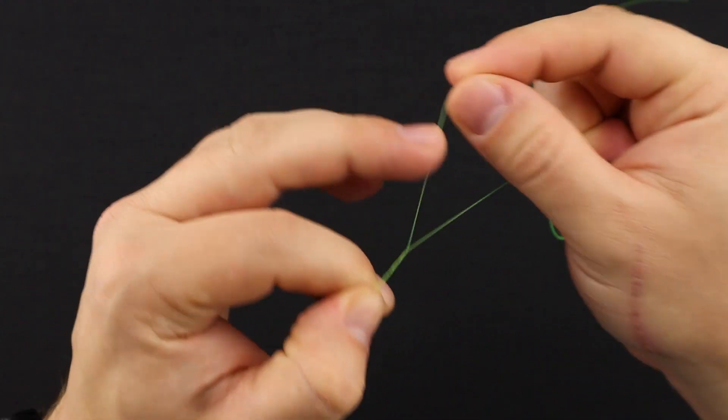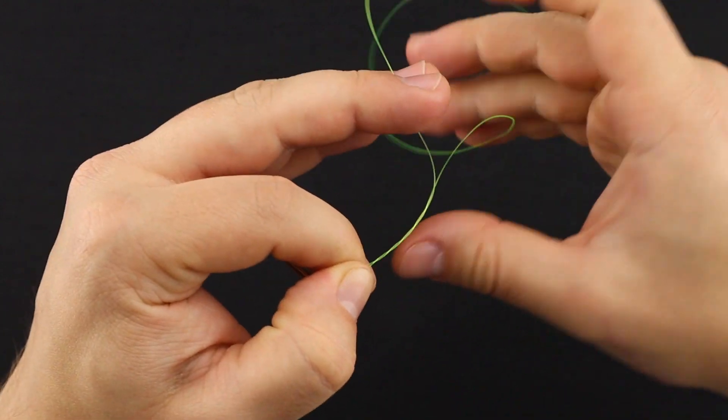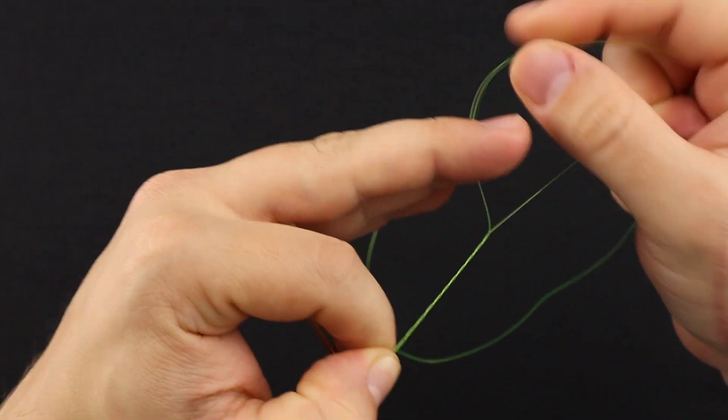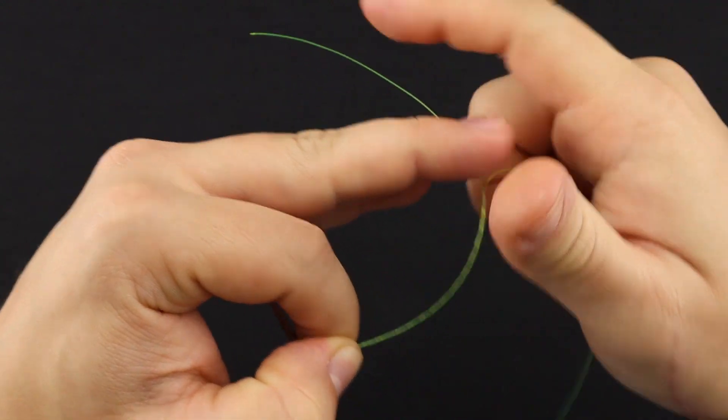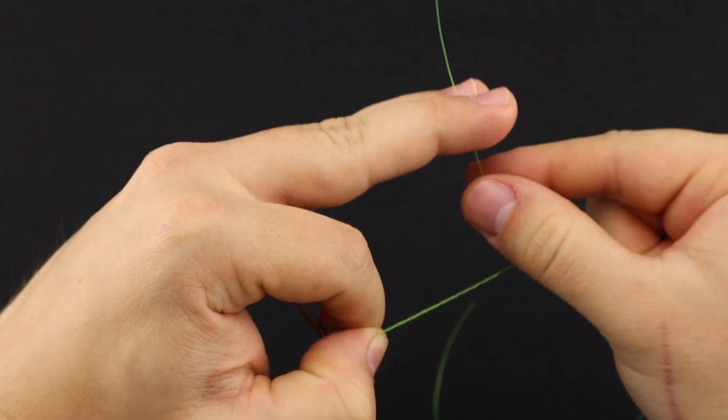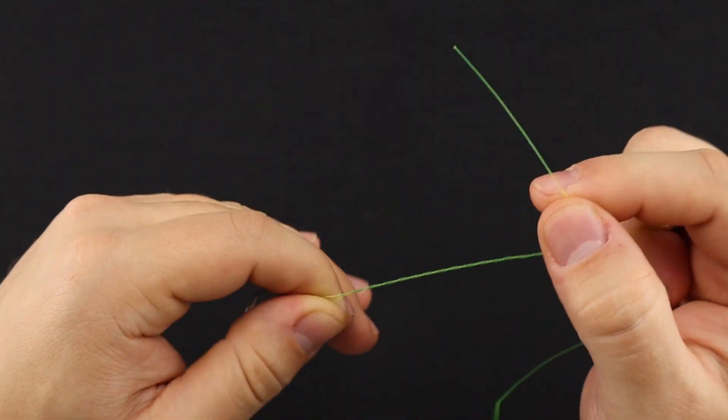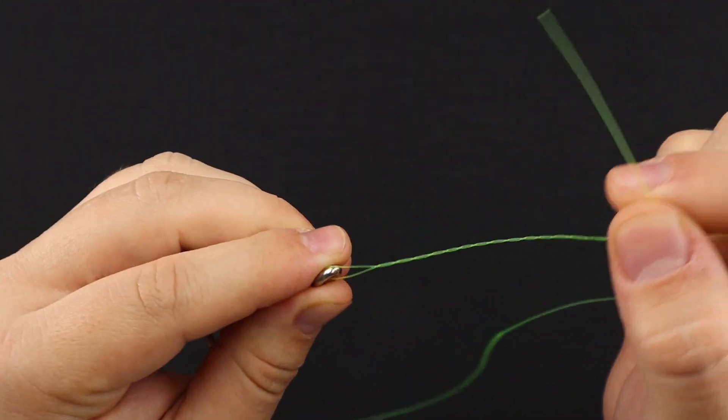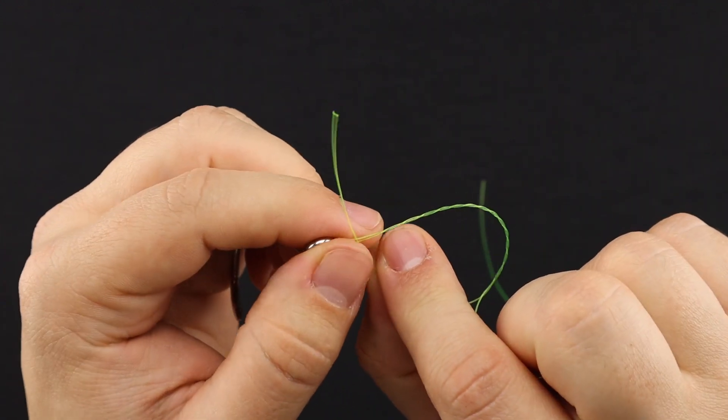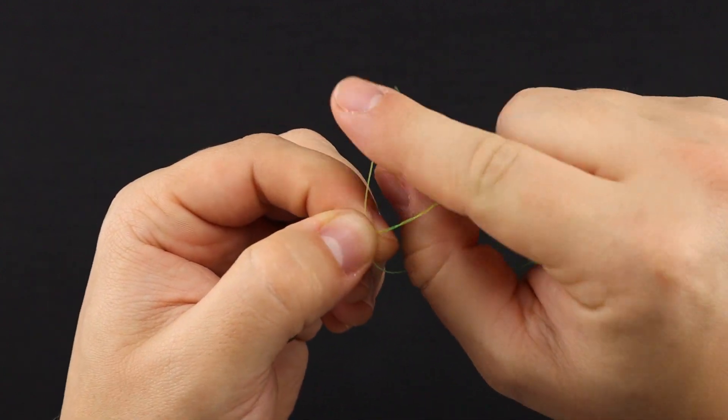So one, two, three, four, five, six, seven, and eight. Now place the tag end through this first loop you have near the eye of the hook just like so, and then come through this new loop you just created.